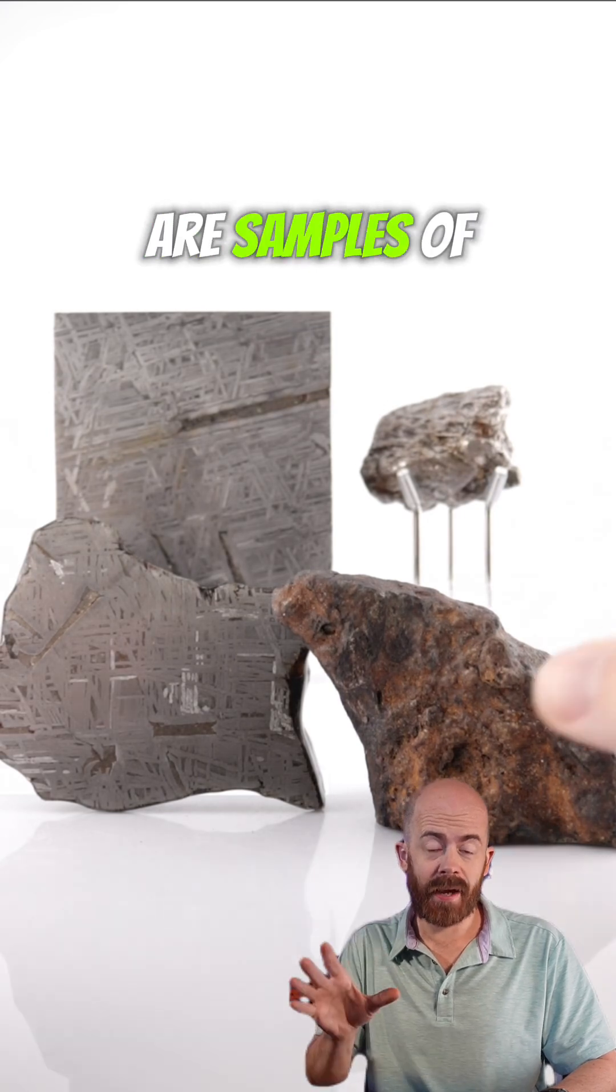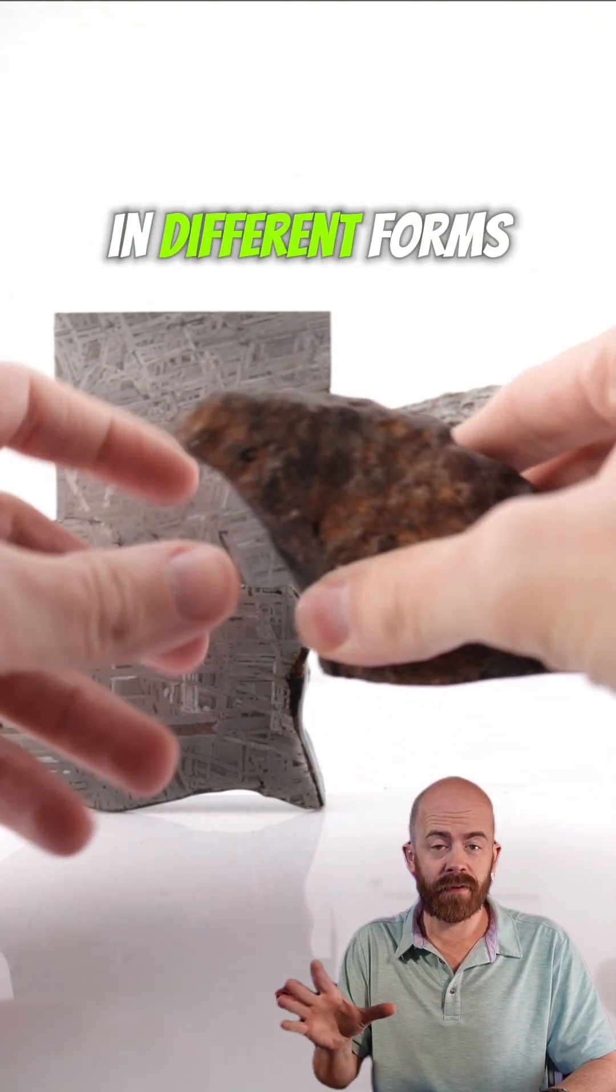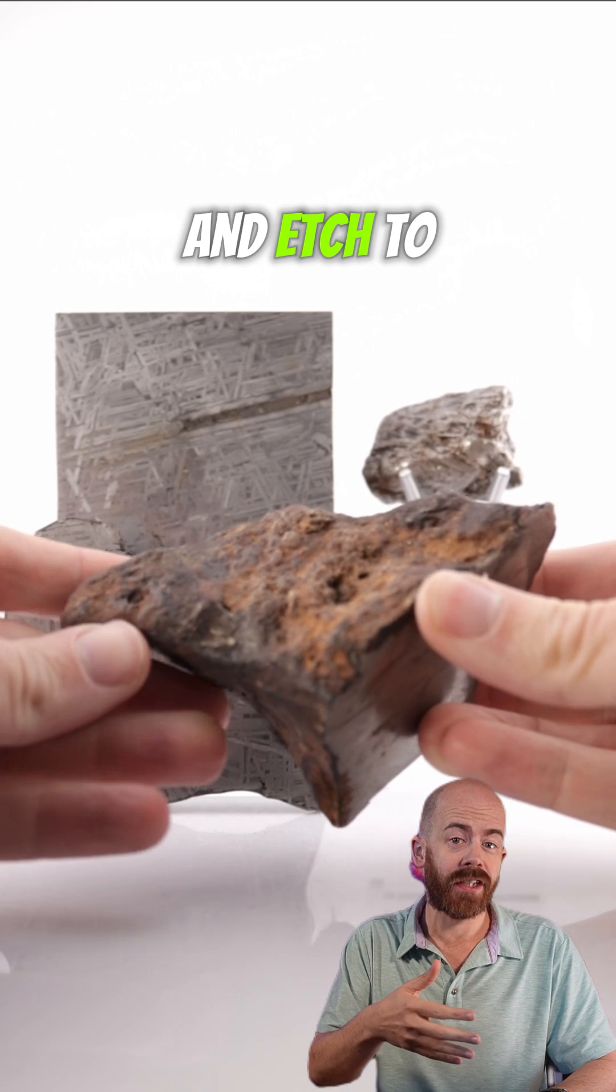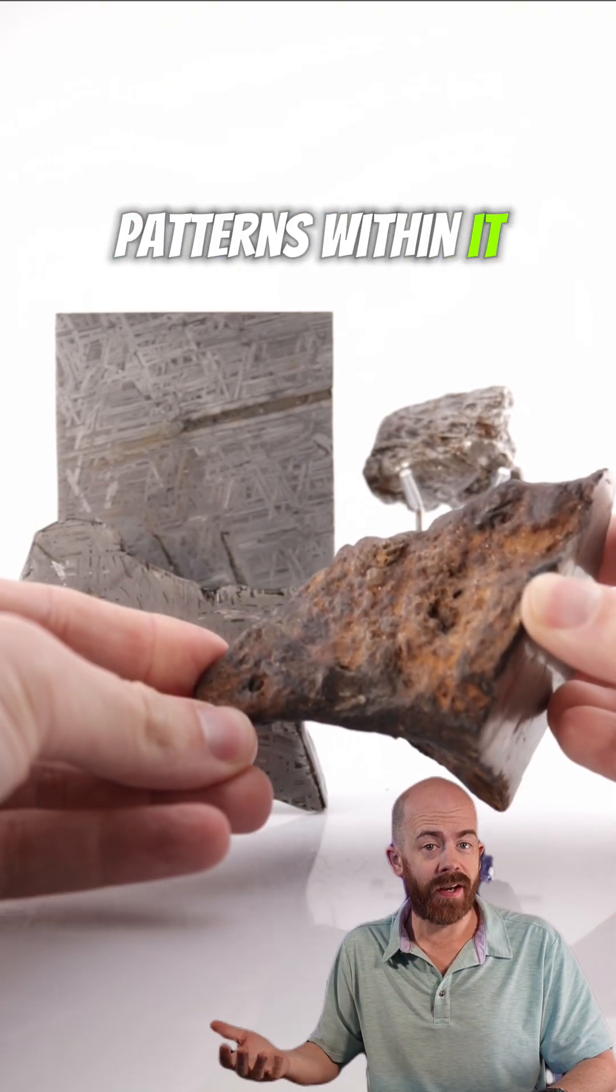All the things you see on the screen here are samples of the Alatai meteorite in different forms, cut into different shapes and etched to show the unique patterns within it.